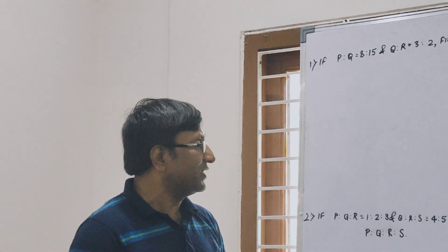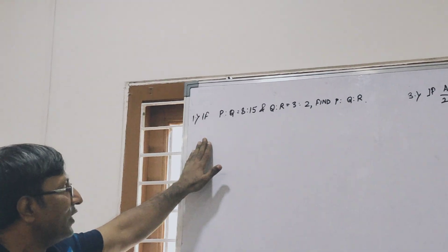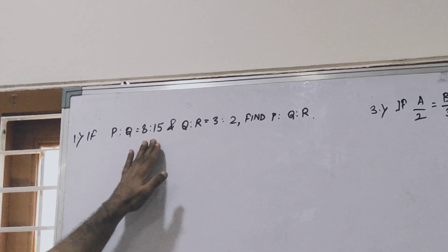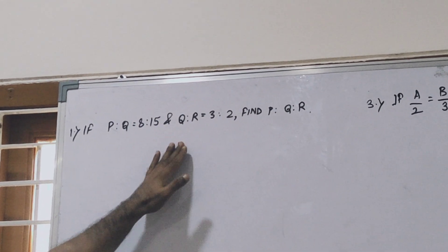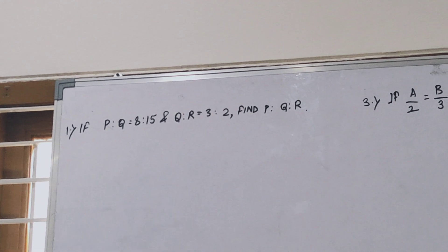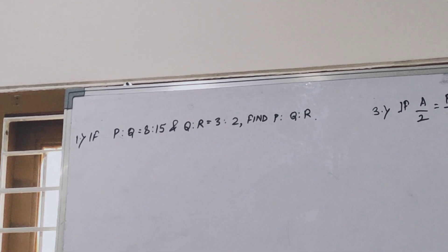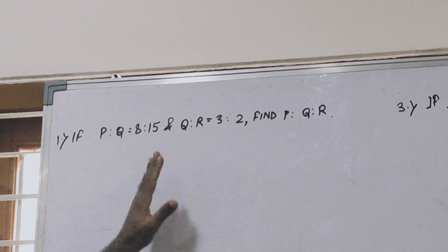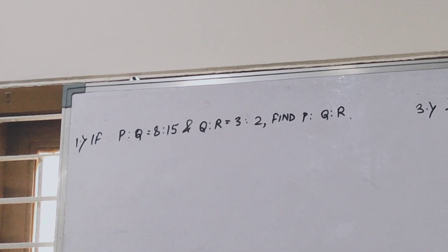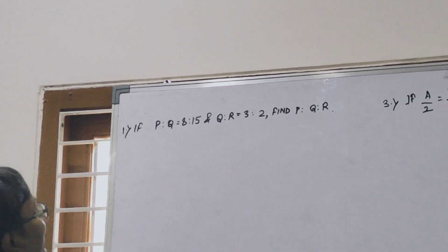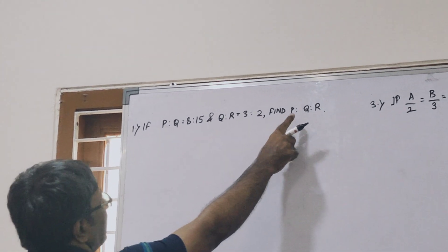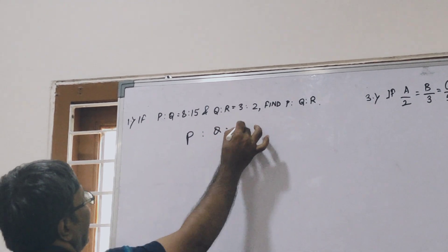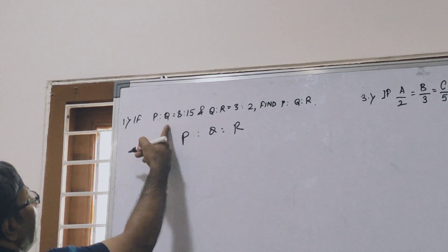The first one is P ratio Q equal to 8 ratio 15 and Q ratio R equal to 3 ratio 2. Find P ratio Q ratio R. There are many ways to solve this question, but the simple trick is what you see. Write first P, Q, and R.